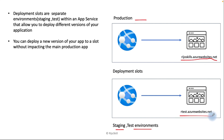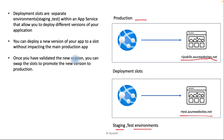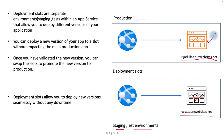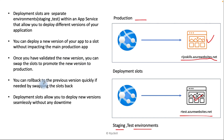After you create your deployment slot and set up the test environment, you review and validate the new version. Once testing is complete and the application is working fine, the next step is to swap the slot to promote the new version to production. Just click swap and automatically your testing environment application will be swapped to the production slot. This allows you to deploy new versions seamlessly without any downtime.